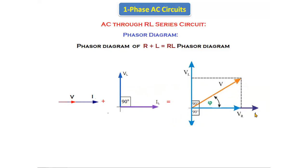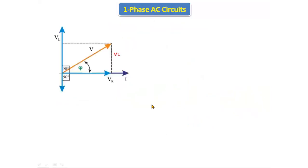The phase angle between the total current and total voltage is indicated by φ. To form a triangle in the phasor diagram, we draw a dotted line parallel to VL. This is the phasor diagram of the RL series circuit. Observe clearly — this triangle consists of VR, VL, and V. V is the resultant voltage, VL is the voltage across the inductor, and VR is the voltage across the resistor.